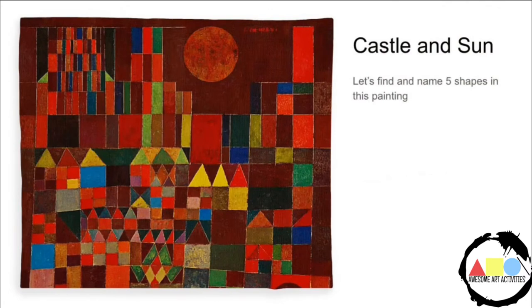This is the artwork that we're looking at for our art project today. This is called Castle and Sun by Paul Klee. I want you to look at this painting and see if you can find five different shapes. You might have to pause and look carefully to see if you can find five of them.